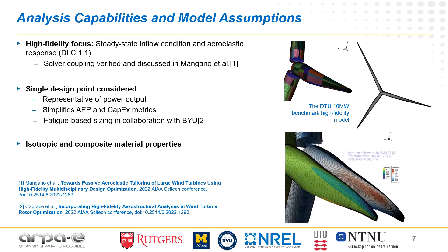Moreover, we only consider the turbine rotor design, ignoring the mutual interaction between the rotor itself and the rest of the turbine. Conventional design tools use multi-body formulations to account for the structural response of the entire structure. The methodology we propose does not aim at replacing such tools, but rather complement them, offering high design insight on system components. Unsteady and extreme loads are driving factors in the sizing of wind turbines. Although our framework has been extensively used for multipoint optimization problems, the results presented in this video consider a single inflow condition representative of the turbine power output. We collaborated with the Brigham Young University team to address this design concern, proposing a methodology to include extreme and fatigue loads obtained with conventional tools within the high-fidelity approach.